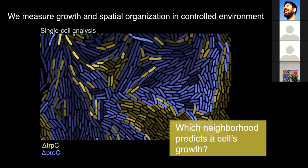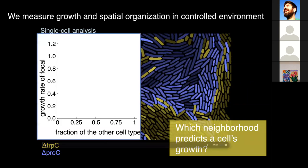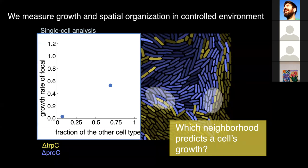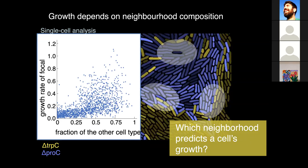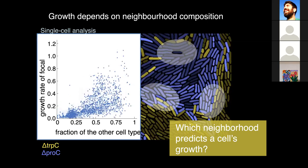What we do is select single cells, measure the growth rate, and measure the fraction of the other type around the focal cell we are measuring. If we plot many single-cell growth rates, we obtain a scatter plot where there is a positive correlation between growth of a focal cell and fraction of the other type. We analyzed a specific size of neighborhood, but this might not be the one that gives the highest correlation between growth and fraction of the other type. So we can change and iterate this process with different interaction ranges and different neighborhood analyses, obtaining different scatter plots. Every time we obtain a different correlation score between growth of the cell in the middle and fraction of the other type within that specific neighborhood.